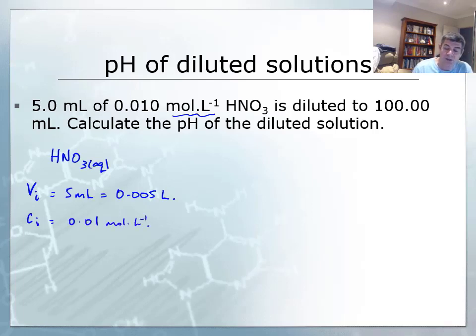Then I'm going to dilute this to a 100 mL solution. So my final volume is 100 mL, which is 0.1 liters. I need to calculate the pH of the dilute solution.